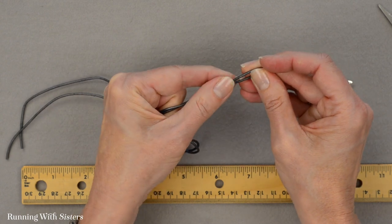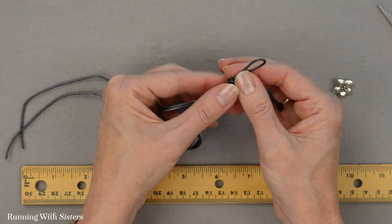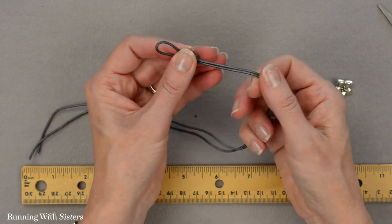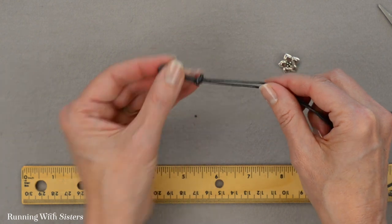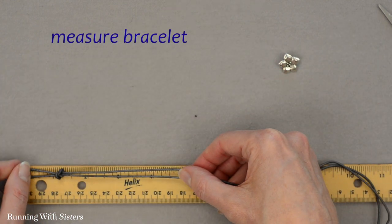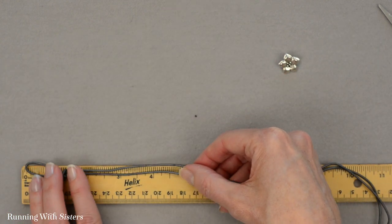Now to figure out where we want to put our little button clasp, what we want to do is measure our bracelet. We determined that we want the finish length to be seven inches long. That's just the right size for me.